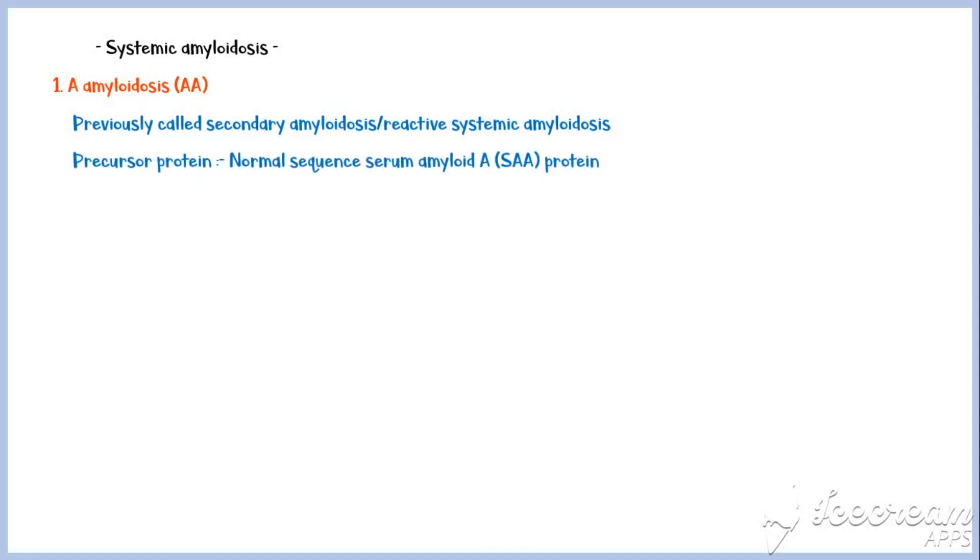First let's take systemic amyloidosis. Under this type, the most common form is AA amyloidosis, which was previously called secondary amyloidosis, or reactive systemic amyloidosis. The precursor protein for AA amyloidosis, is a normal sequence serum amyloid A protein, which is an acute phase reactant, secreted by the liver in response to many cytokines.